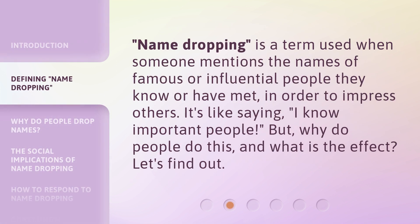Name-dropping is a term used when someone mentions the names of famous or influential people they know or have met, in order to impress others. It's like saying, 'I know important people.' But why do people do this, and what is the effect? Let's find out.